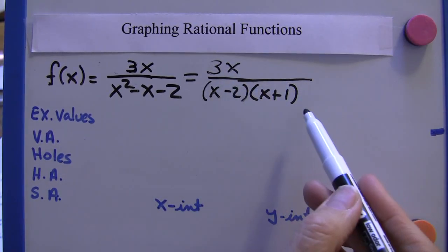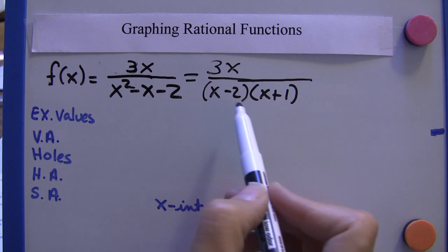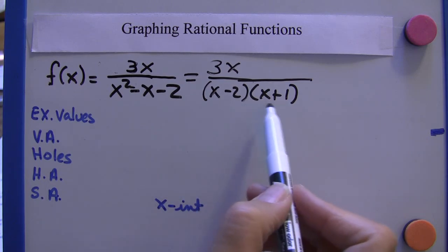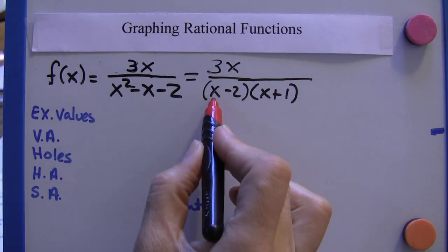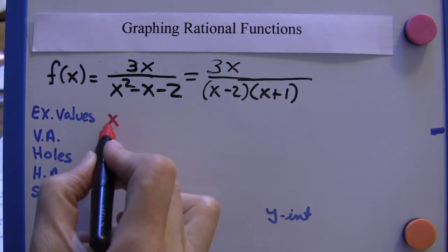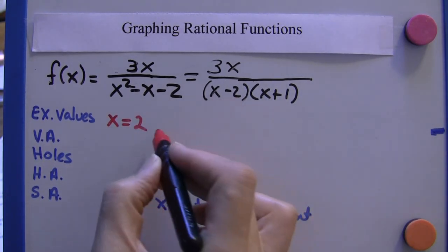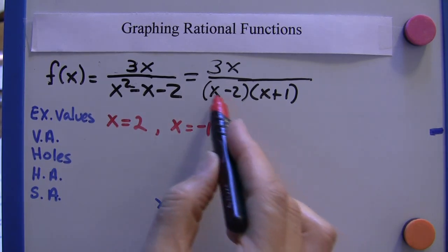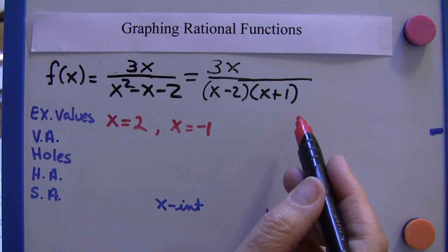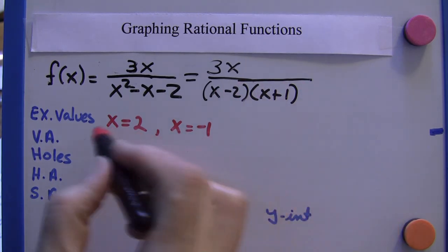We can't factor anything out of this. However, by factoring the denominator, we can tell where our excluded values are. The excluded values are where the denominator cannot equal 0. So if x was 2, that would make it 0, so that can't be. And x equals negative 1 because that would make each of these equal to 0, making the denominator 0, so they're excluded.